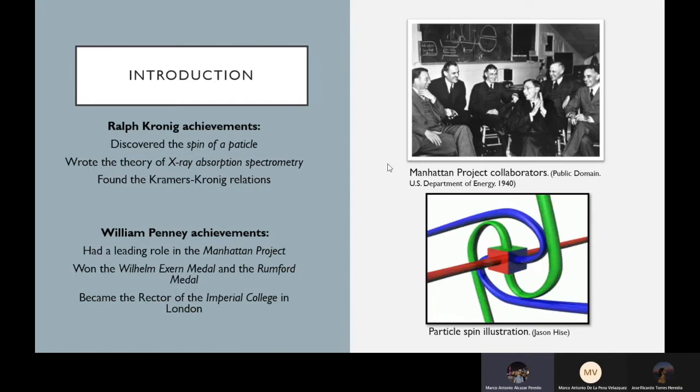Now I will briefly introduce you these two scientists. We have Kronig that was noted mostly because of the discovery of particle spin, an intrinsic form of angular momentum carried by different particles, for the theory of x-ray absorption spectroscopy that is a used technique for determining the electronic structure of matter, and finally his theories of Coster-Kronig transition.